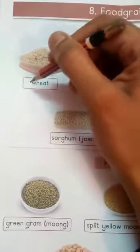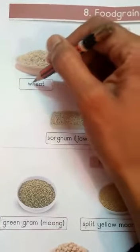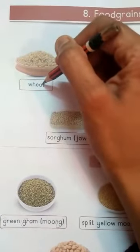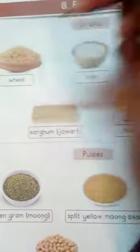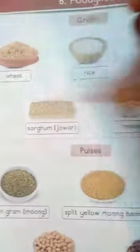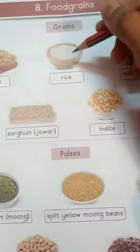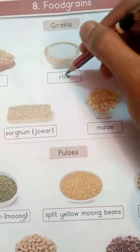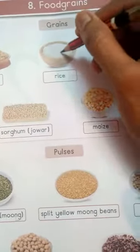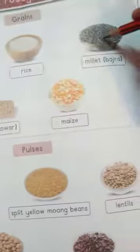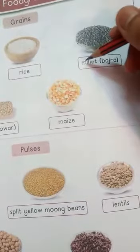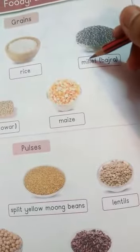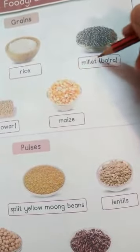This is called wheat. W-H-E-A-T, wheat. This is called rice. R-I-C-E, rice. This is millet. M-I-L-L-E-T, millet.